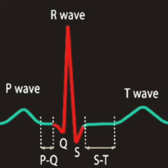The QRS complex is completed just before the opening of the semilunar valves. The S wave is a negative pointed deflection which follows the R wave.